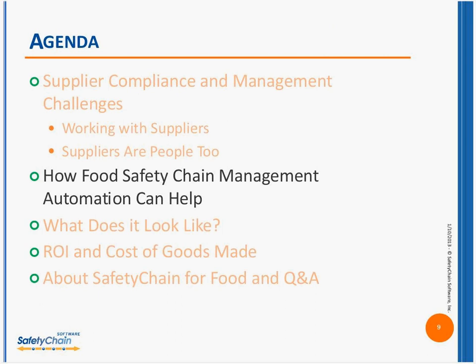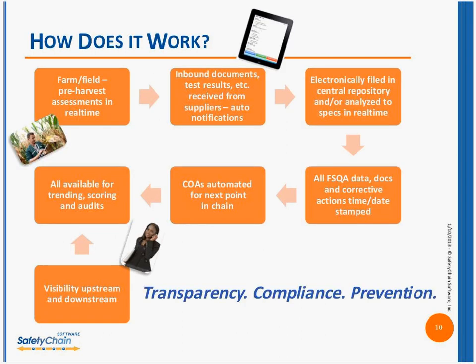When we look at supplier compliance and management and how food safety chain automation can help, it's really for both the folks managing supplier compliance and for suppliers working with their customers. There's really a process here. When people speak about supplier compliance, a lot of times it starts with getting documents from suppliers after something has been harvested or is ready to be sent. But what end customers — services and retail customers — want today is safety assessments even before that.